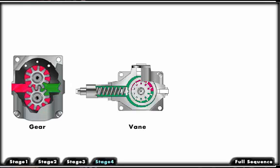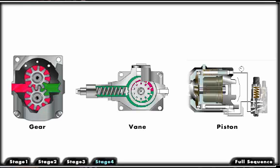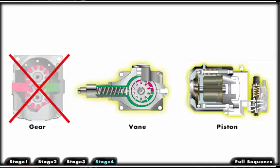Of the three types of hydraulic pumps discussed — gear, vane, and axial piston — only the vane and piston may be pressure compensated.